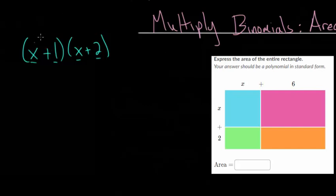Now, we learned that we could use what's called distribution, where the x distributes to both, and the 1 distributes to both of these, and you end up with four terms, which you can then simplify.